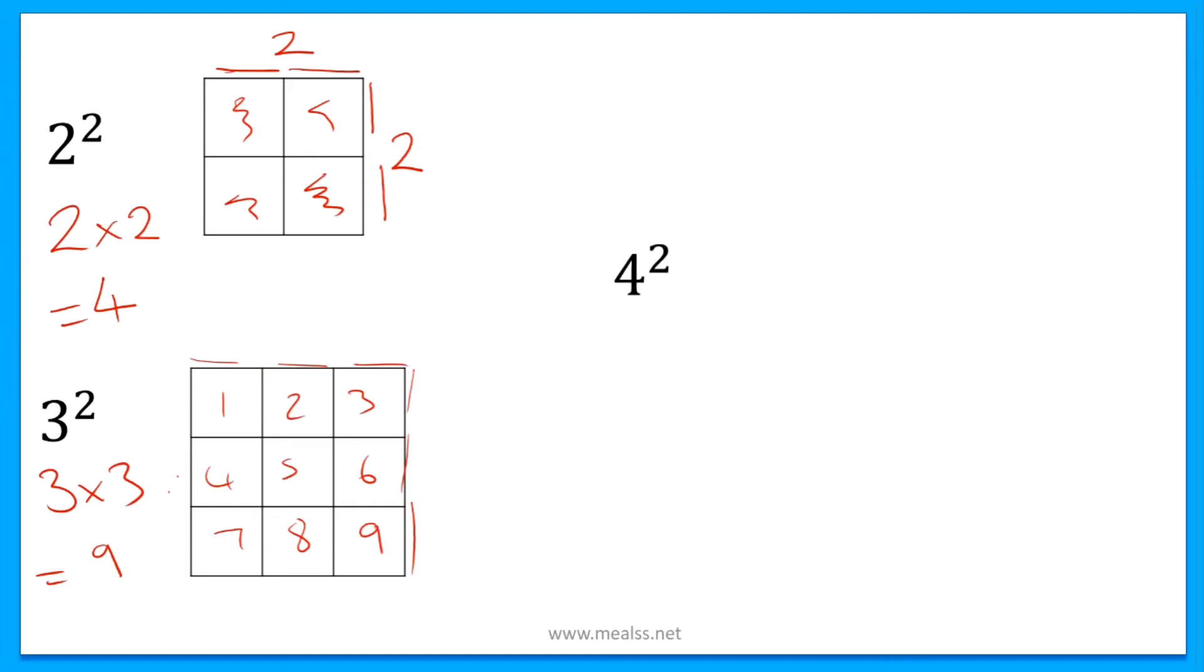The same applies for any squared number. So 4 squared, we know the answer is 16. If we look at the diagram, there are four parts to this side, and if you were to count up all of the individual small squares, you would find 16 in total.